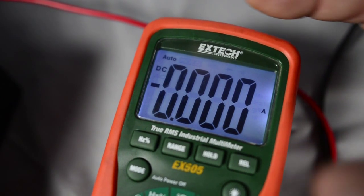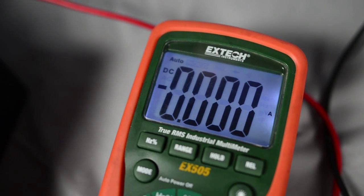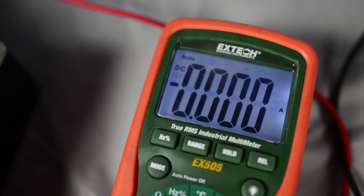Our multimeter today has the ability to read up to 10 amps, meaning anything above that you try to read, you're going to blow the internal fuses.